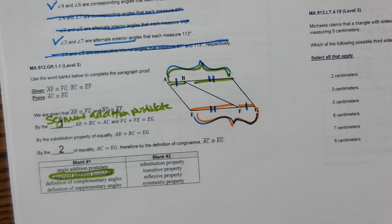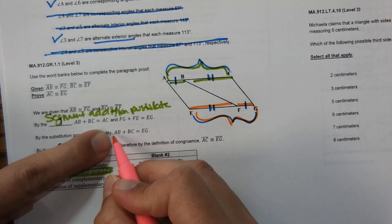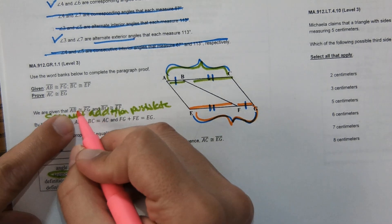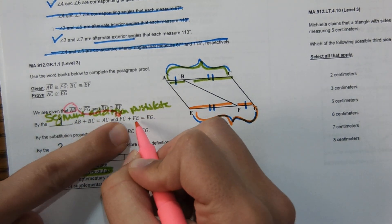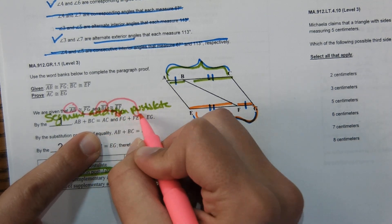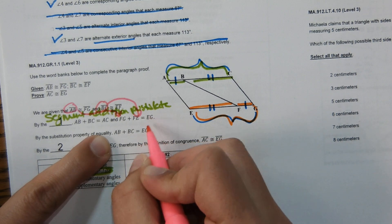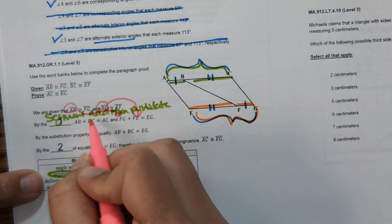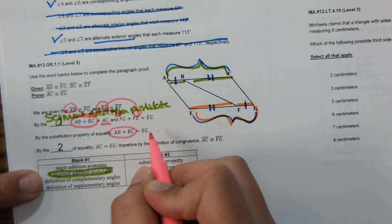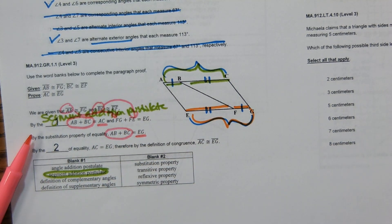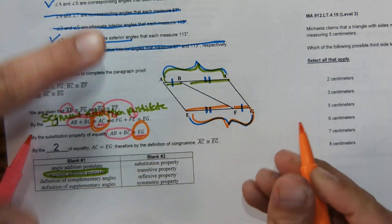The next statement uses the Substitution Property of Equality: AB plus BC equals EG. Since AB equals FG and BC equals FE, we substituted those in to get this statement. From there, since AB plus BC equals AC and AB plus BC also equals EG, we can say AC equals EG by the Transitive Property.